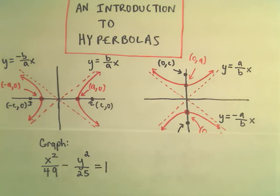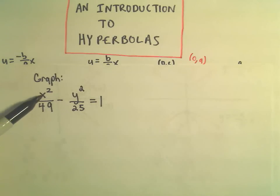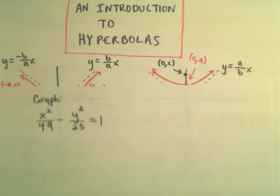Alright, in this video I'm going to do an example of graphing a hyperbola. And what I'm going to graph is x squared over 49 minus y squared over 25 equals 1.